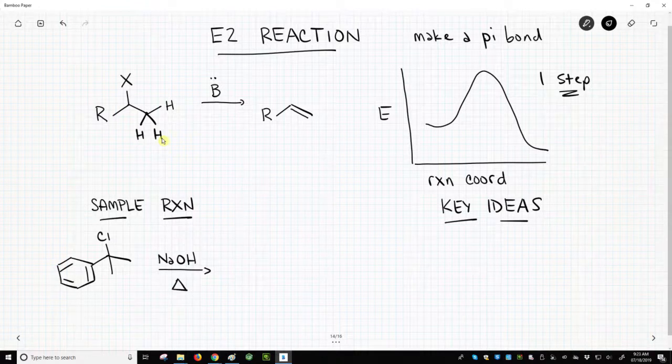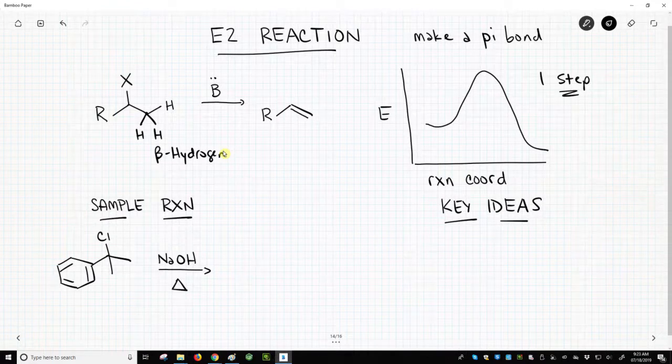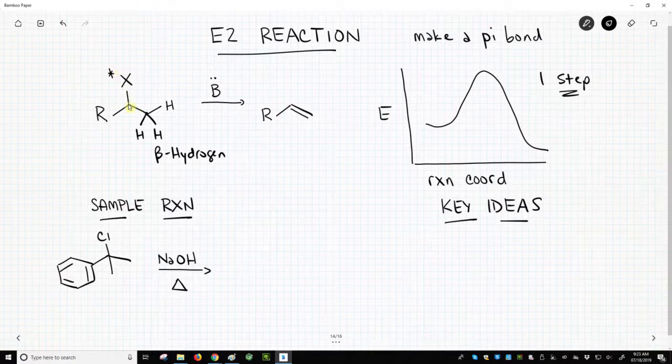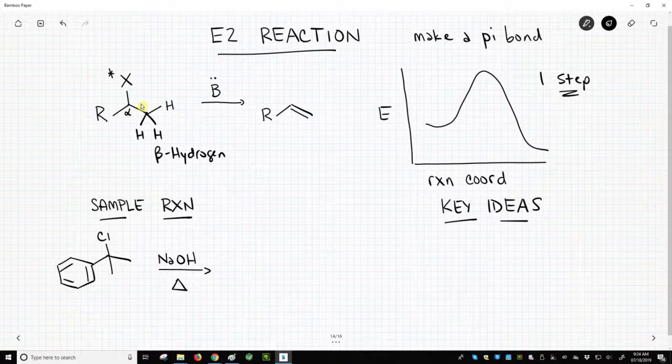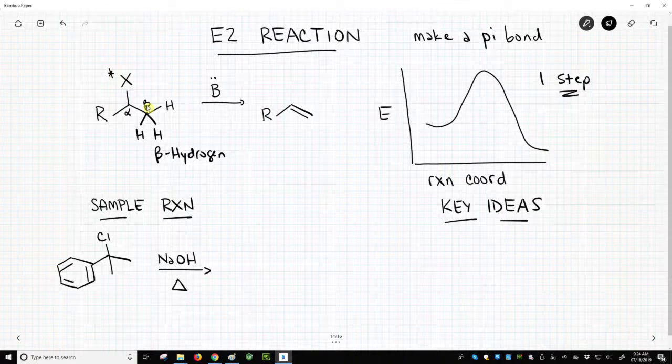This base removes specifically something called the beta hydrogen. Now, what is the beta hydrogen? Well, that Greek letter tells you the position of the hydrogen, and it's the position relative to the halide. So here's our halide. That's important. It's going to be our leaving group. The halide is attached to what we call the alpha carbon. Well, what's next door to the alpha carbon? You got it. It's the beta carbon. And so a beta hydrogen is a hydrogen that's on the beta carbon.